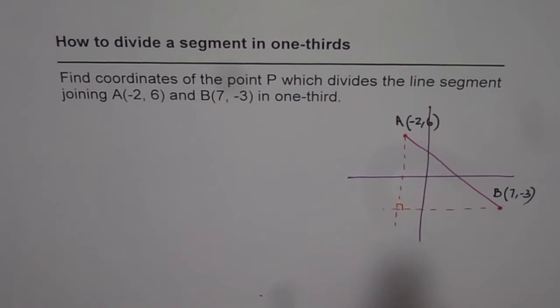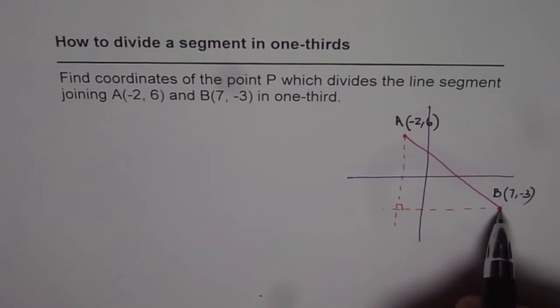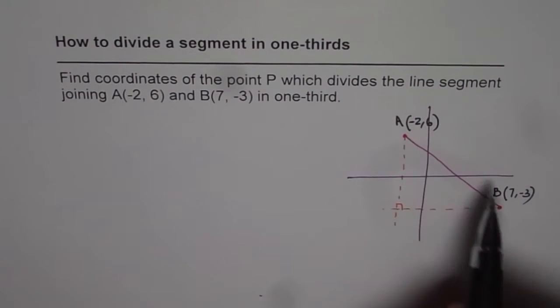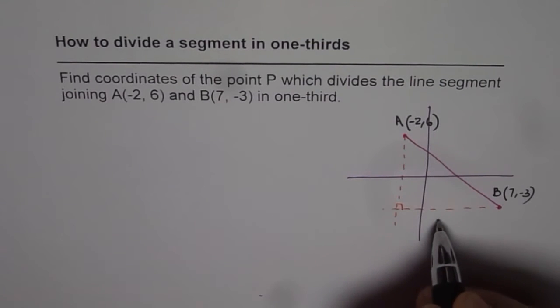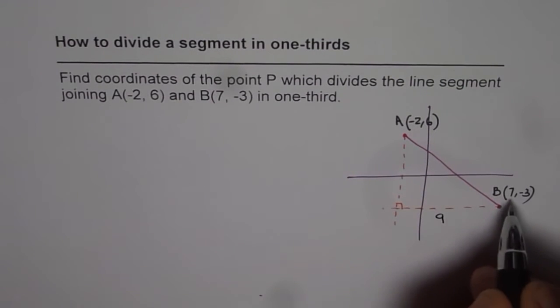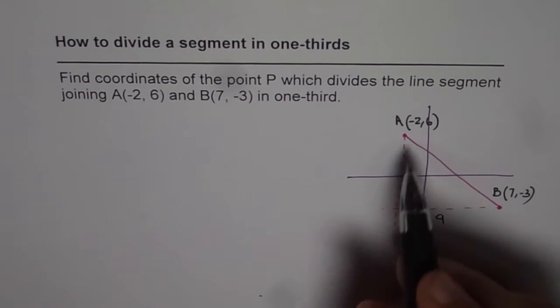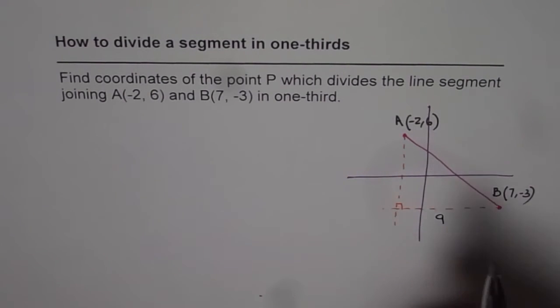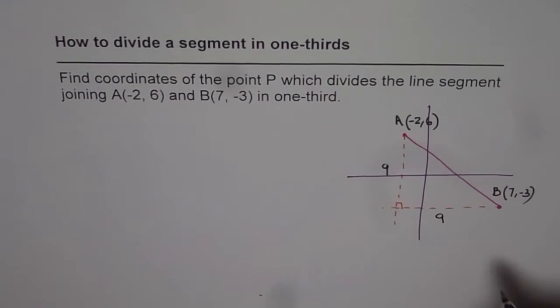The base of this right triangle is the difference in X values, which is 7 minus (-2). That means this length is 9 for us. And the height is the difference in Y values, 6 minus (-3). That is also 9 for us in this particular case.